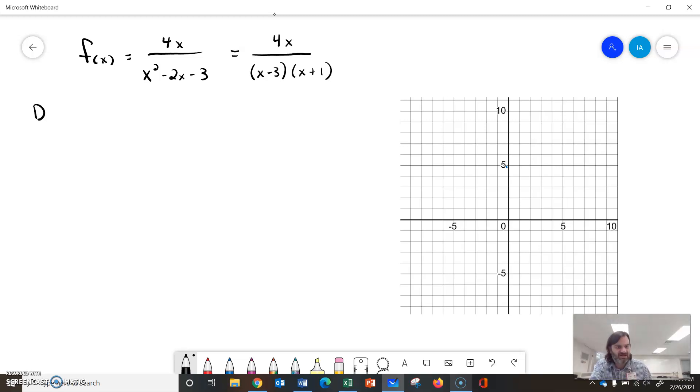So that's my domain. Based on this denominator, x cannot be 3 because that would make the bottom 0, and x cannot be -1.